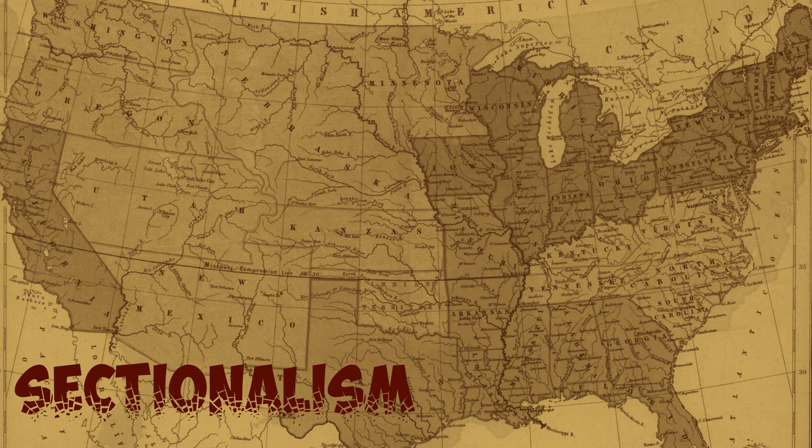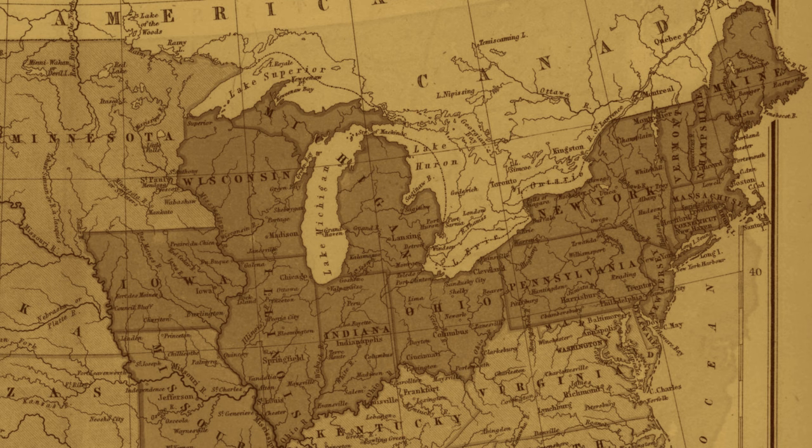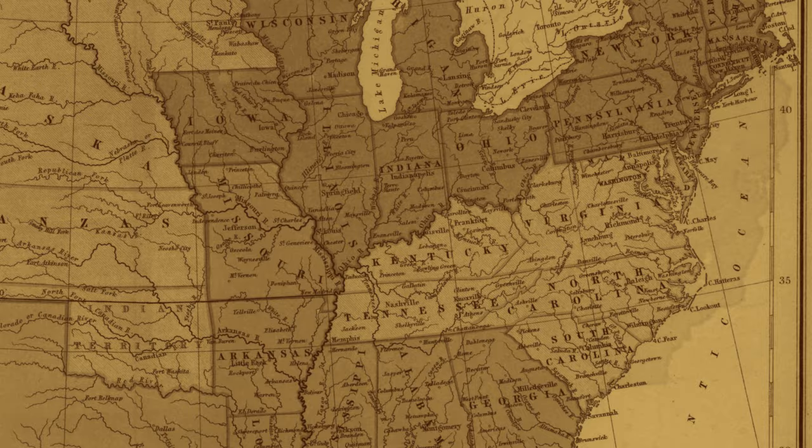Sectionalism is defined as an intense and exaggerated loyalty to a particular region of the country. Northern states favored limits on slavery and opposed the spread of slavery into western territories. They also generally supported the sovereignty of the federal government over states' rights in most cases.